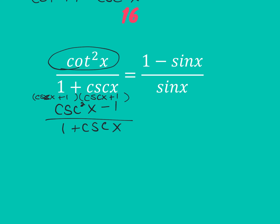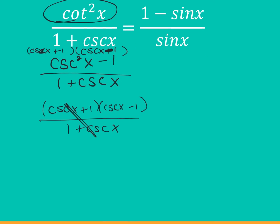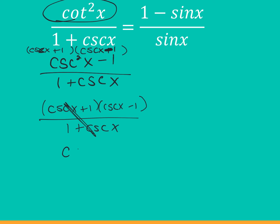Now look at your denominator. So cosecant x plus one times cosecant x minus one, over one plus cosecant x — the plus one's cancel, right? Yeah.